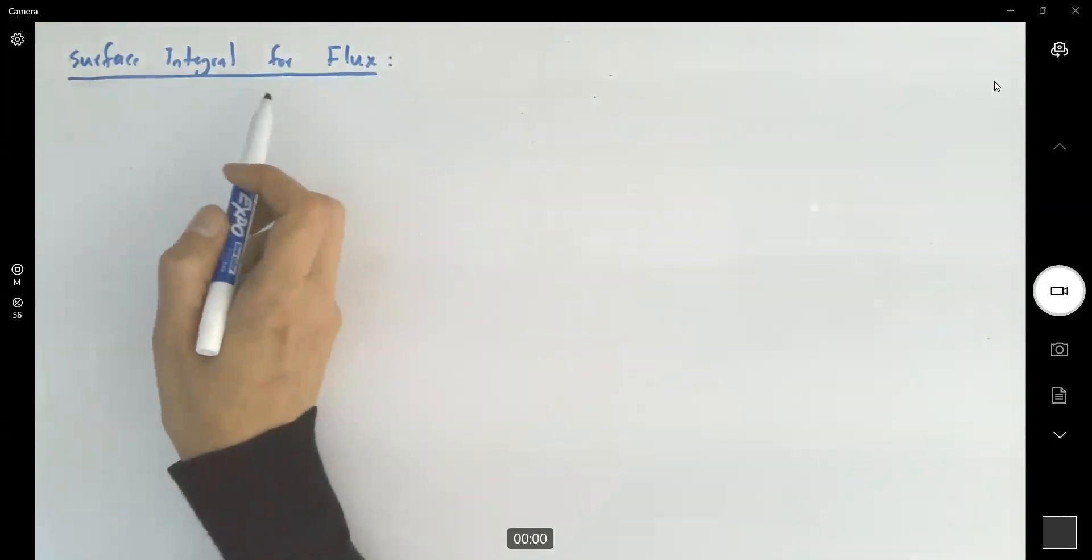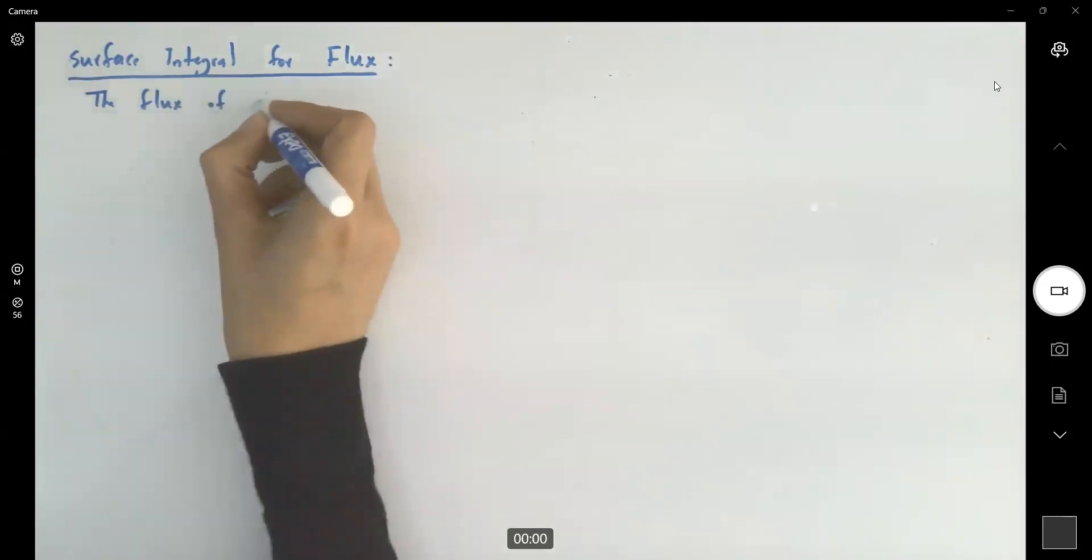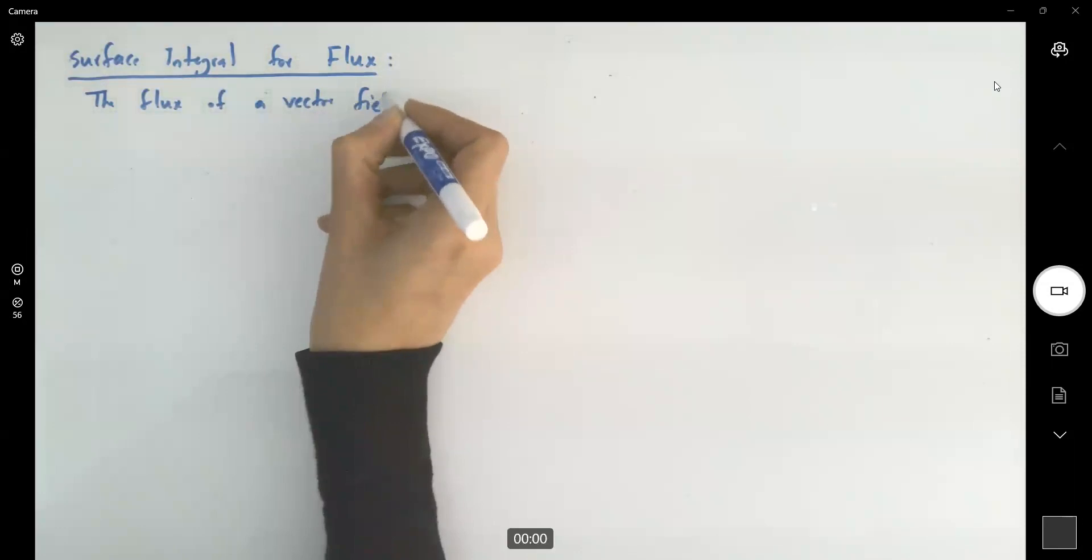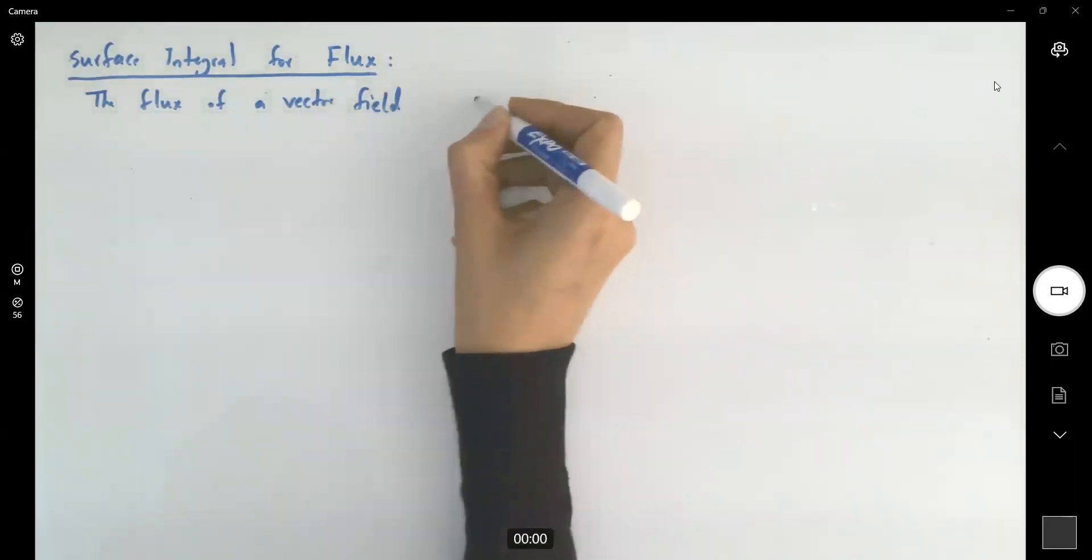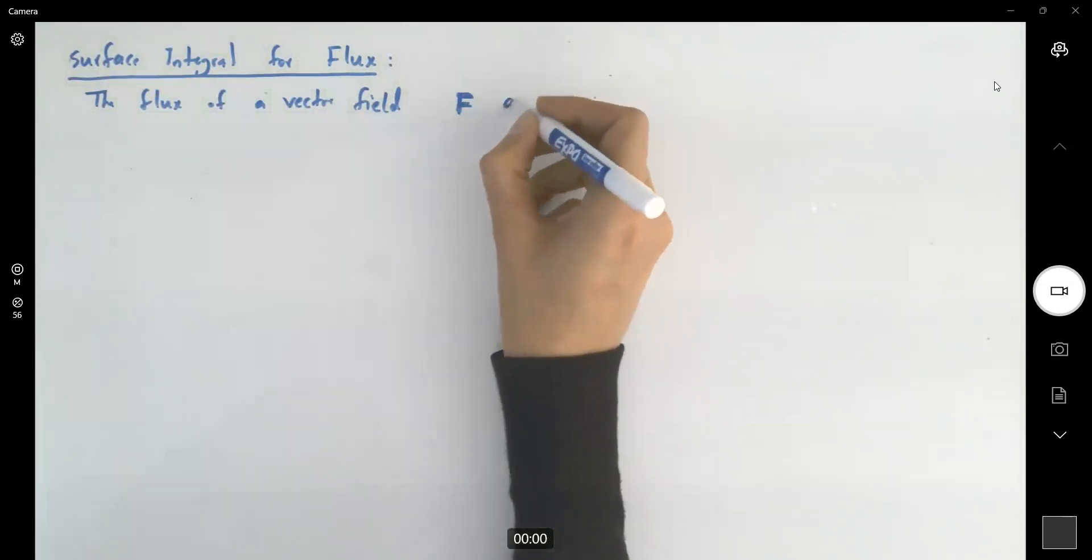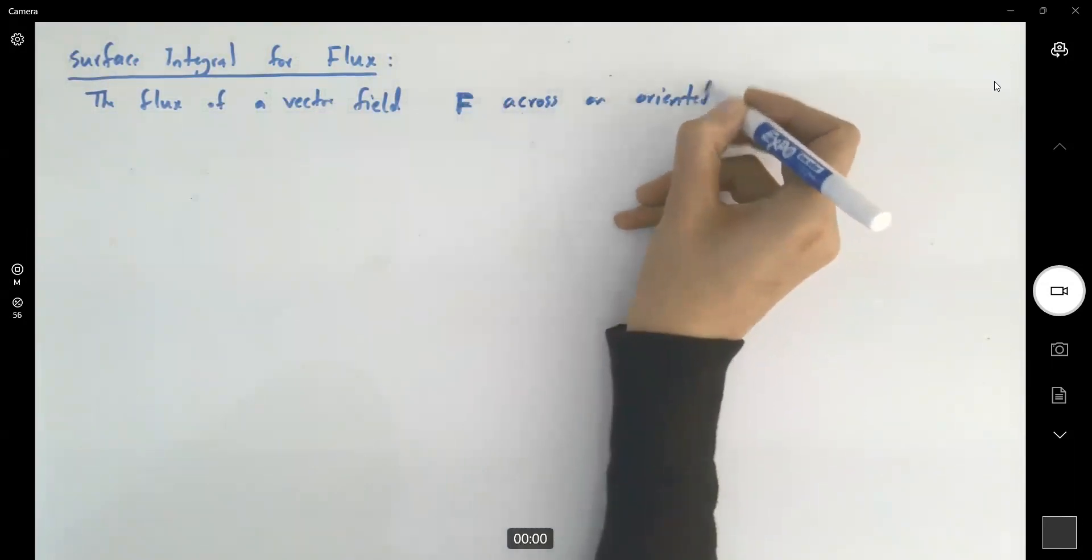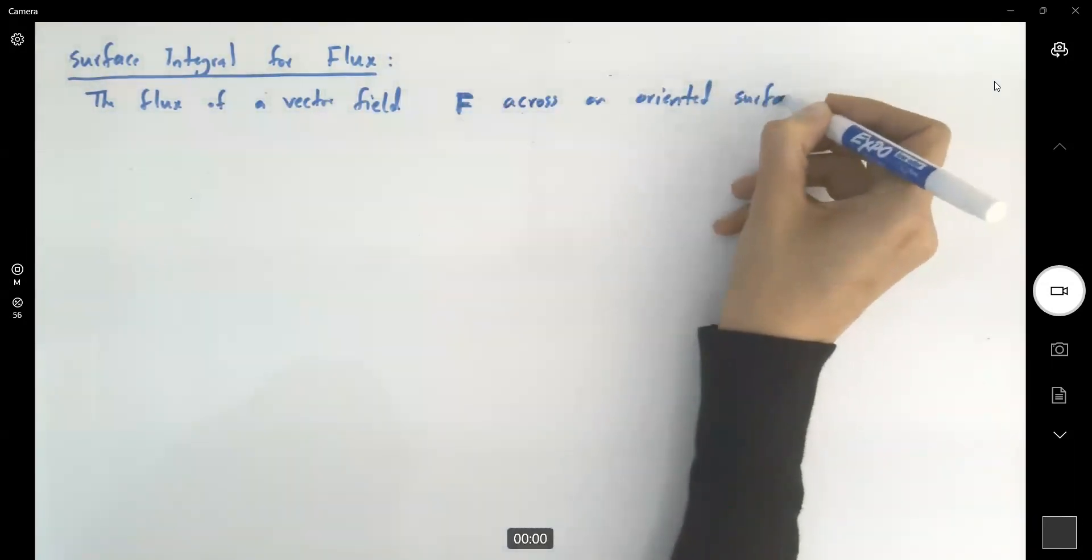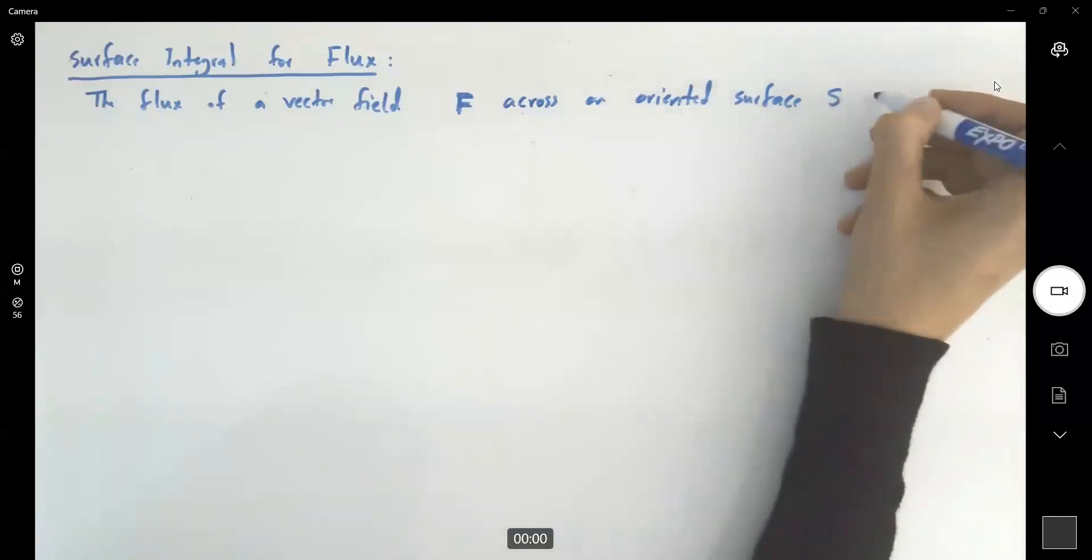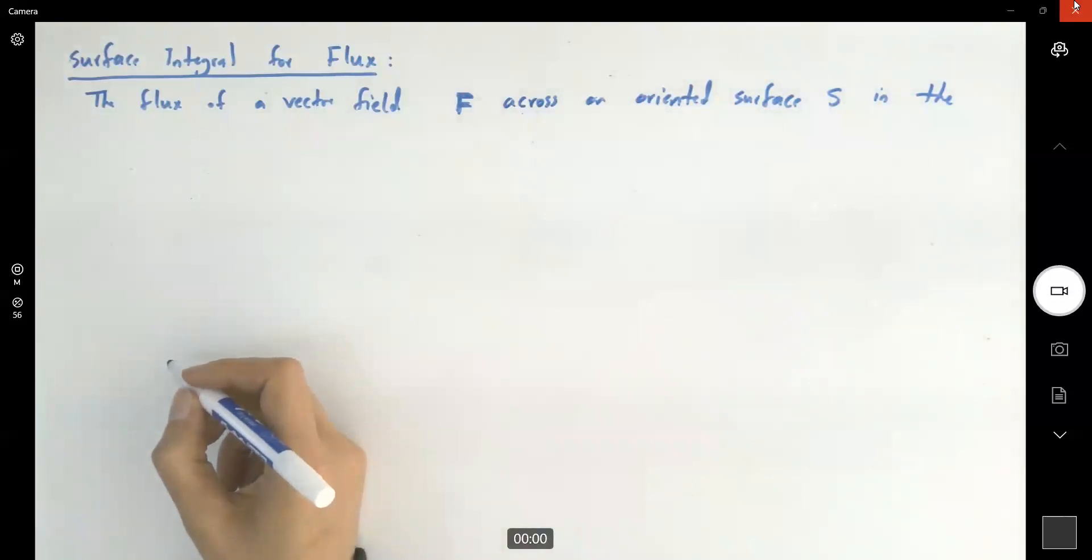Let's talk about surface integral for flux. The flux of a vector field F across an oriented surface S in the direction of n, with S being part of a level surface.